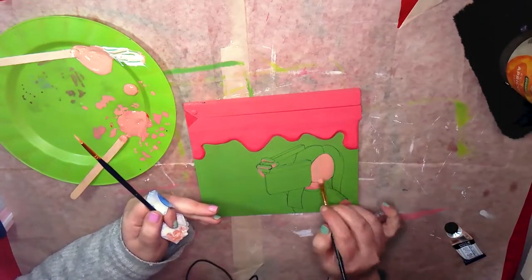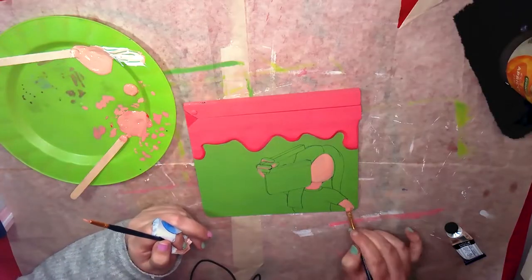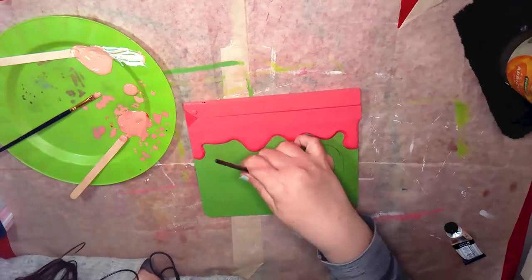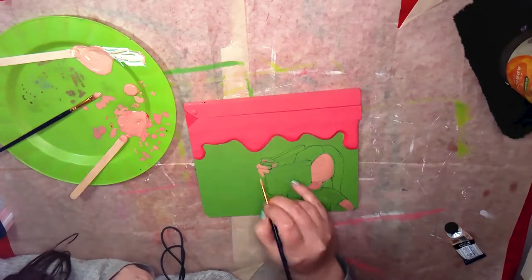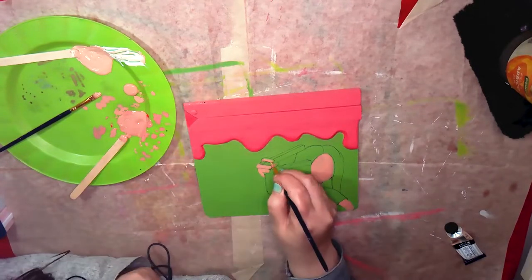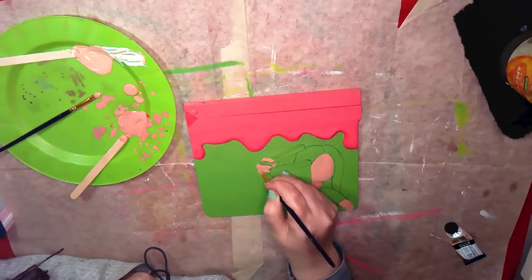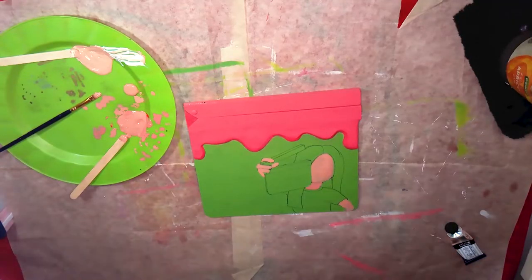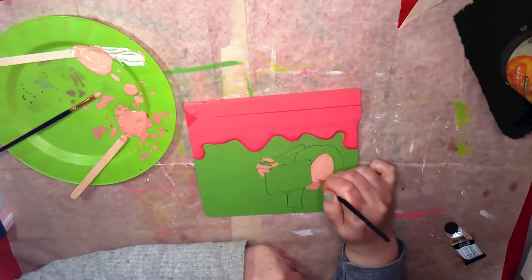At the minute, again, I'm just taking it step by step. I've drawn it, I'm happy with it, and now I'm just blocking in the color. Then we'll work on shading and blending and whatever.